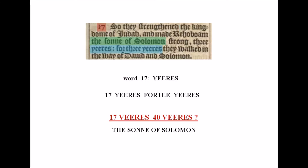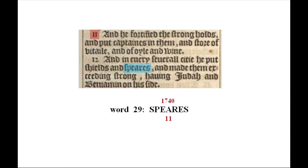Now I think there's some wordplay going on here. The 17th word is 'years,' followed by 4, 3, and 'years' again. But the letter Y in 'years' looks almost like a V. This kind of looks like it says '17 veers, 40 veers.' And notice above it, it reads 'the son of Solomon.' We're still in 2 Chronicles, chapter 11, looking now at verse 11. Start counting, and the 29th word is 'spears.' Again, 29 represents 17, 40, and 11.